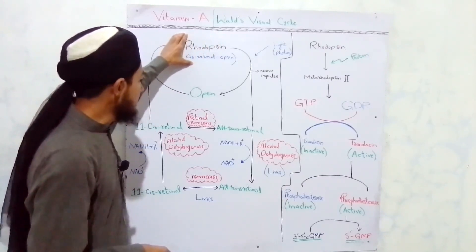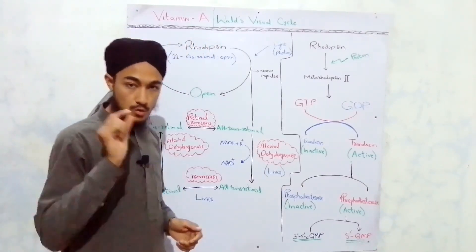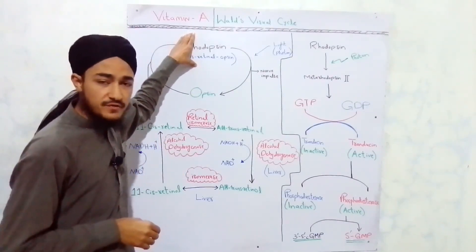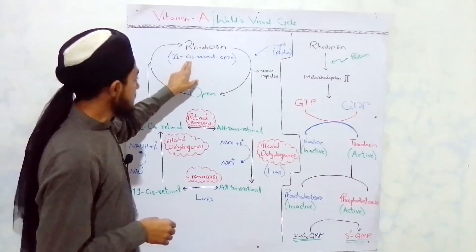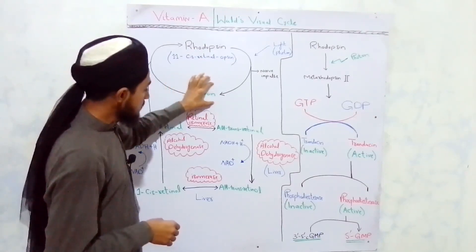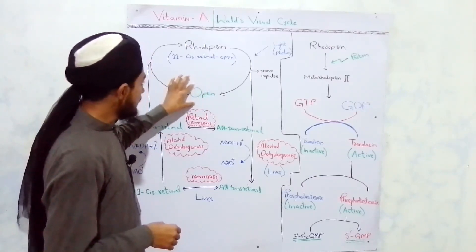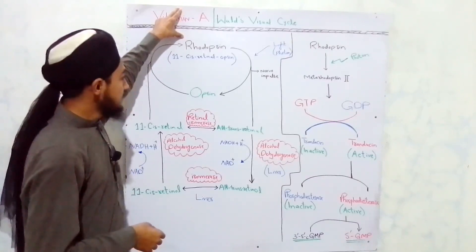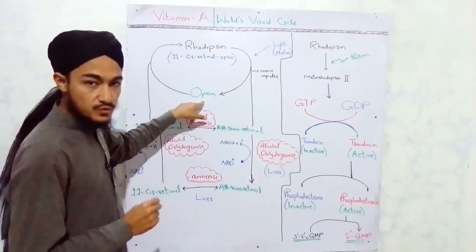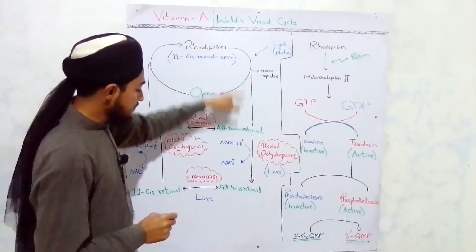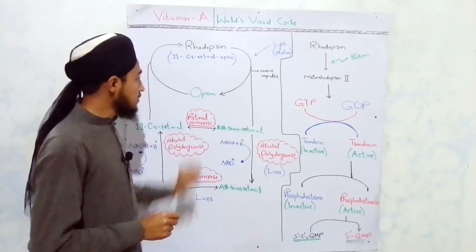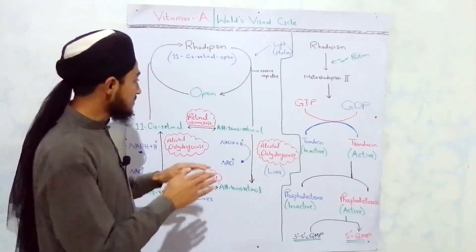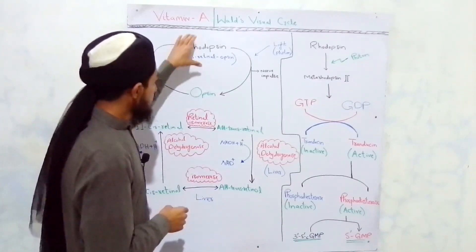The rhodopsin molecule is present in the rod cells of the retina. It is a conjugated protein with a molecular weight of around 35,000. When 11-cis retinal, which is the vitamin A aldehyde form, combines with opsin — a protein — the resulting conjugated protein is known as rhodopsin. In this cycle, we will discuss how rhodopsin is synthesized, cleaved, and resynthesized repeatedly.